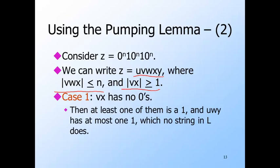There are two cases depending upon whether the adversary picks v and x to have zeros or not. In the first case, suppose there are no zeros among v and x. And since they cannot both be empty, there must be at least one 1 among them.